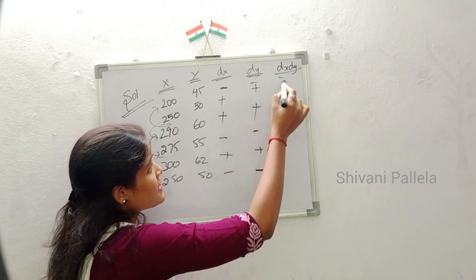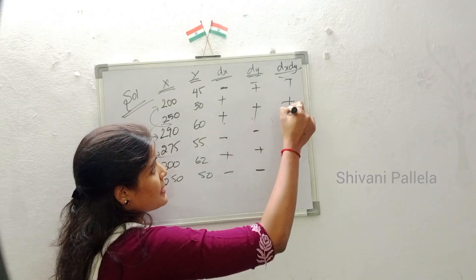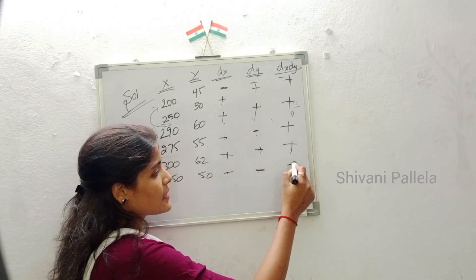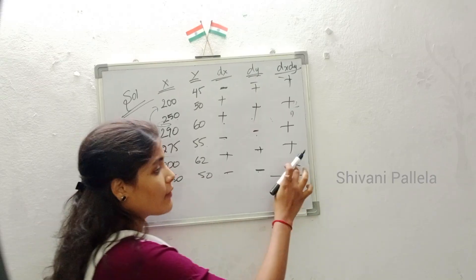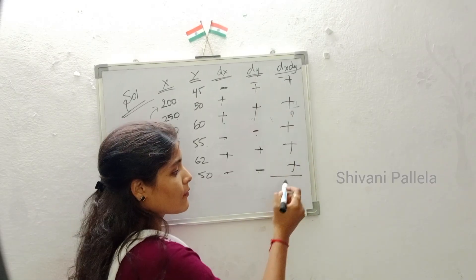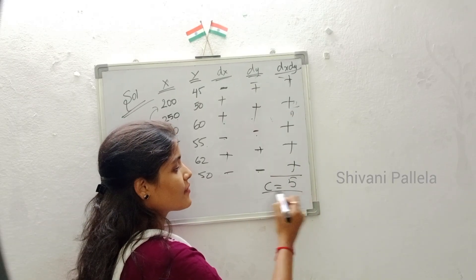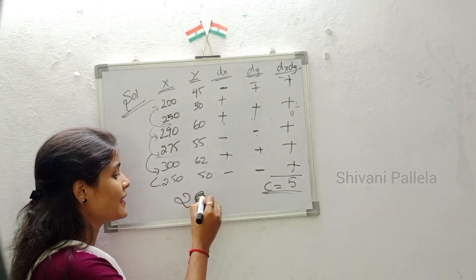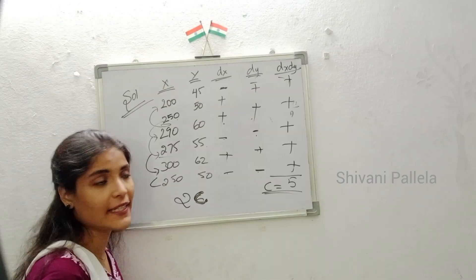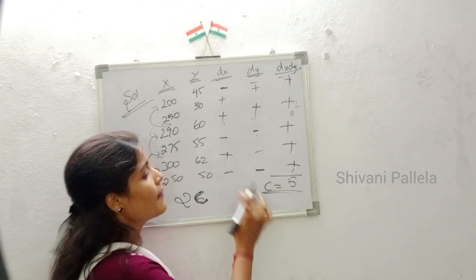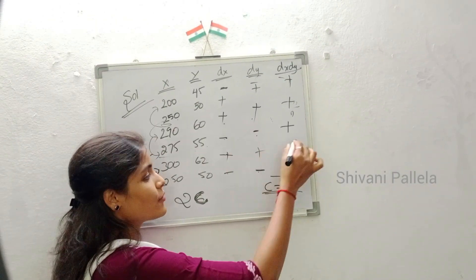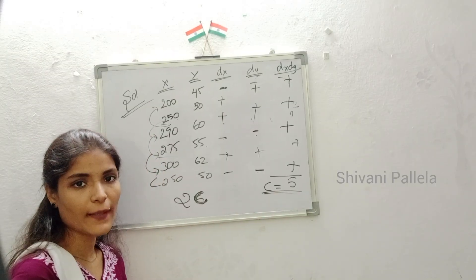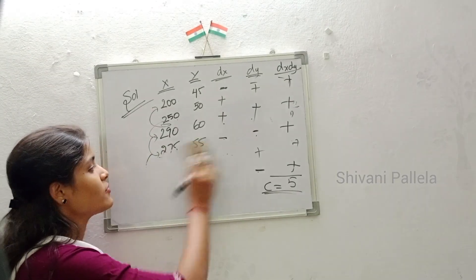Now calculate the dx×dy column: plus×plus = plus, plus×plus = plus, minus×minus = plus, plus×plus = plus, minus×minus = plus. We have got 5 plus signs total. So C = 5. C means the total number of plus symbols in the dx×dy column.